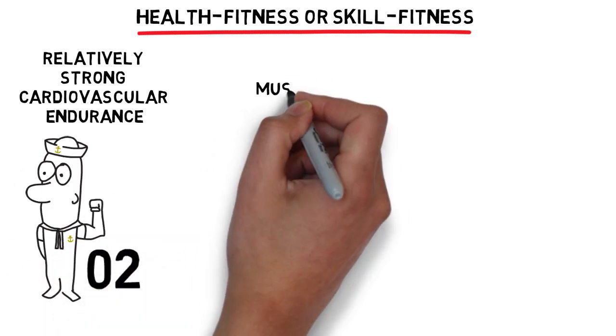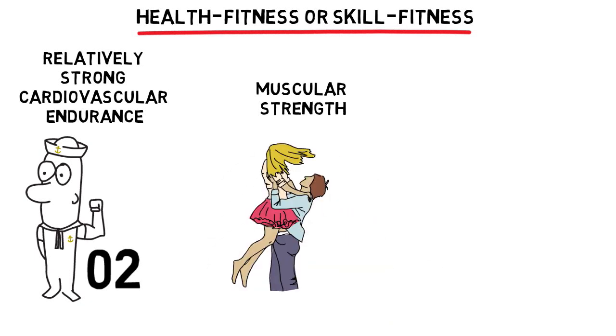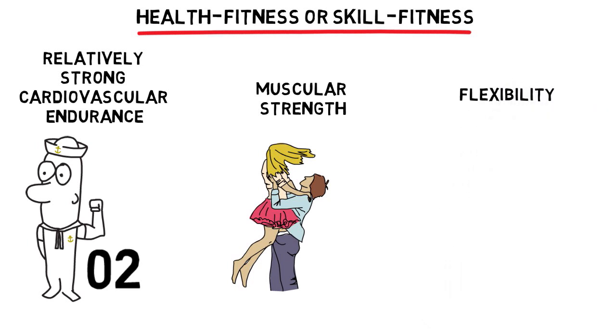Muscular strength: strong enough to pull, push, and lift things in normal life. Flexibility: this is how much you can rotate, pull, or push your joints without injury.